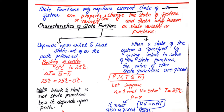One property or variable can change the state of a system, which is why it is known as a state variable or state function. A key characteristic of state functions is that they depend only on the initial and final state, not on the path followed.